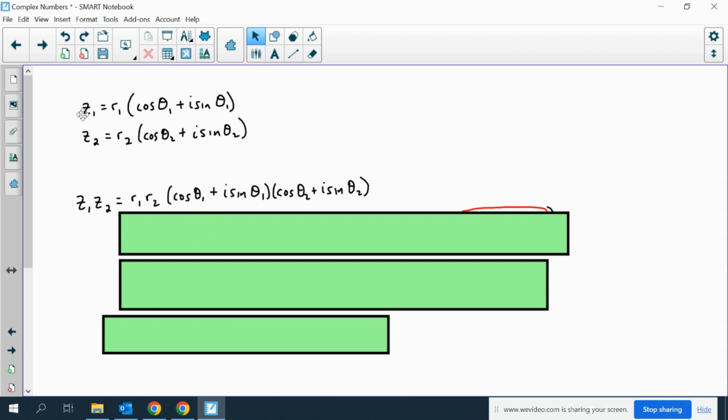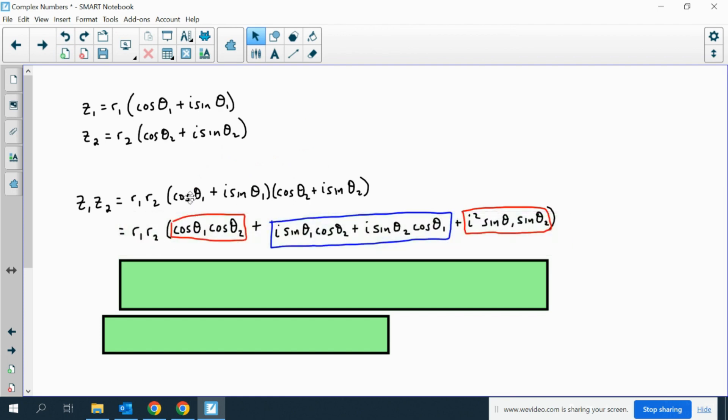We multiply z1 and z2, so we just write it all multiplied together. Then, of course, the same thing we've been doing is we'll do the distributive property. When we do the distributive property, we end up with cosine theta 1 cosine theta 2 plus i sine theta 1 cosine theta 2, i sine theta 2 cosine theta 1, and then i squared sine theta 1 sine theta 2.